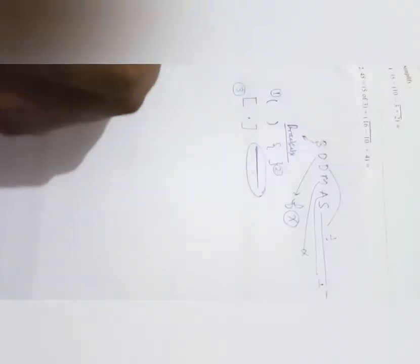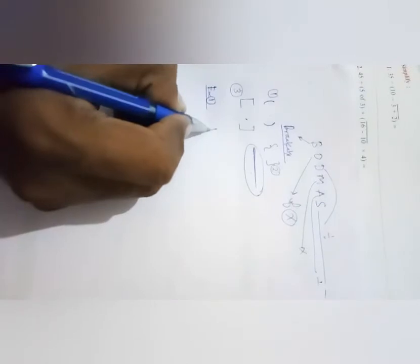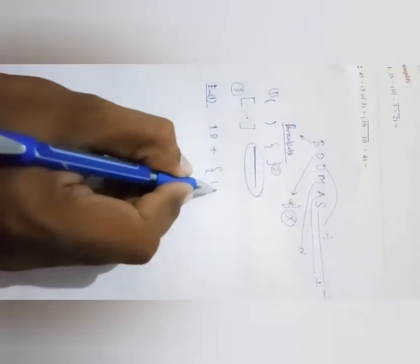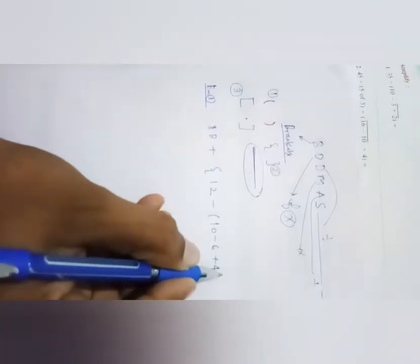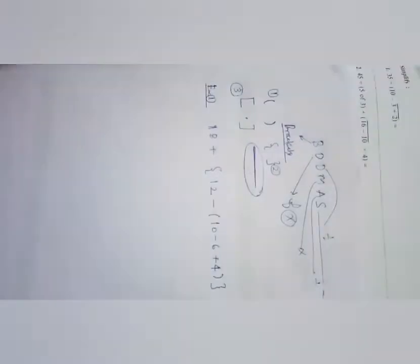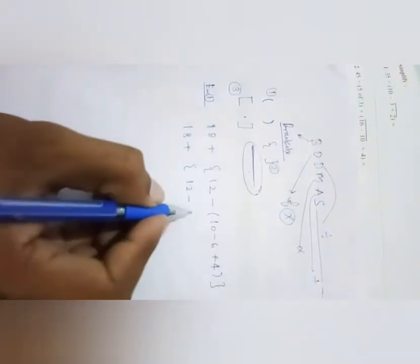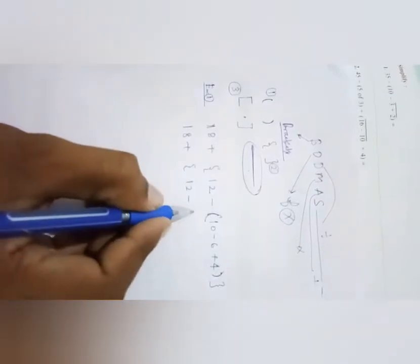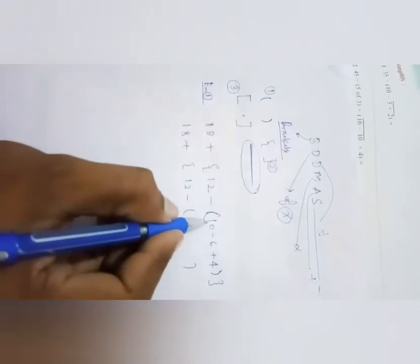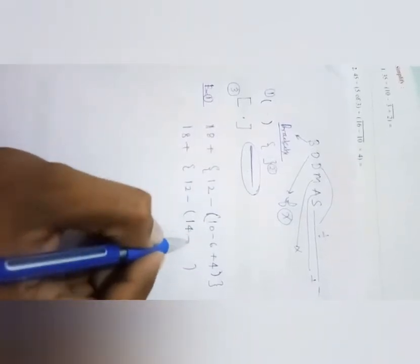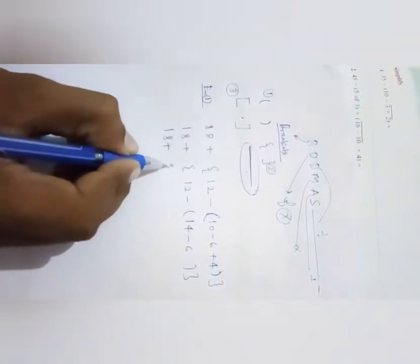Now I am going to take an example to explain how to solve the questions. Example number one: 18 + {12 − (10 − 6 + 4)}. First you have to solve the small bracket. Inside this bracket you have two operations, minus and plus. You solve plus first: 10 + 4 = 14.